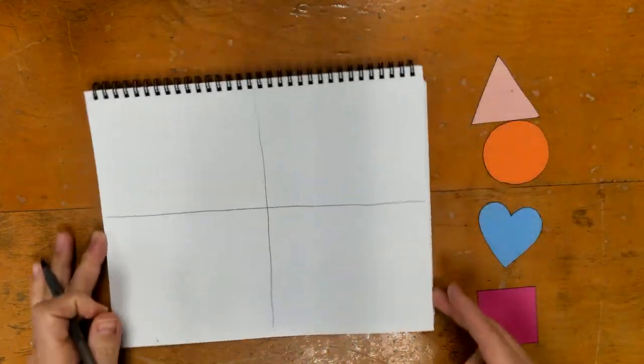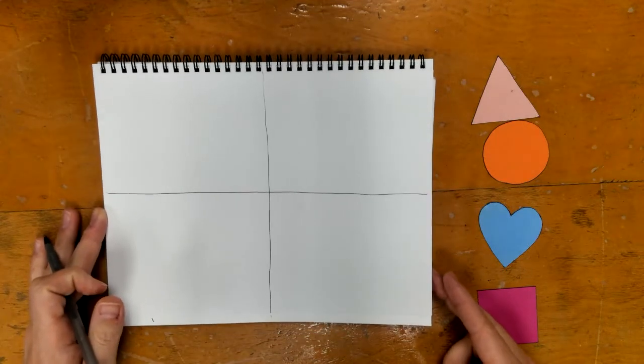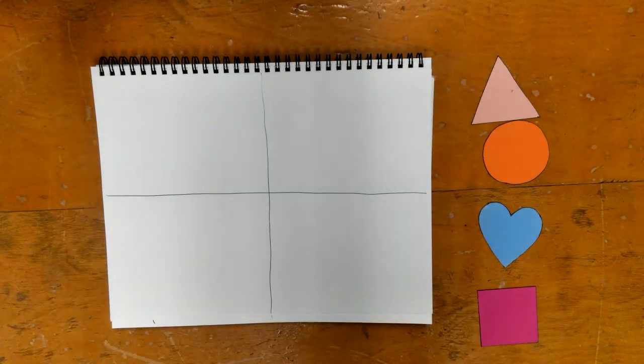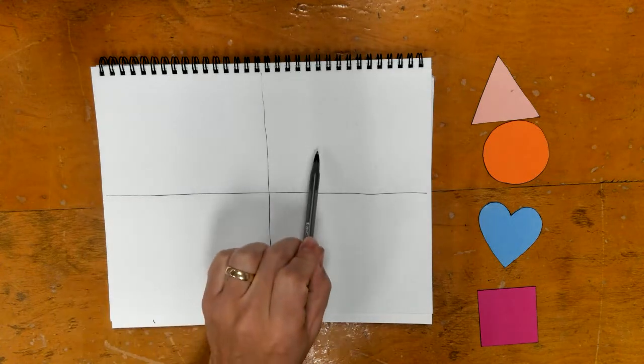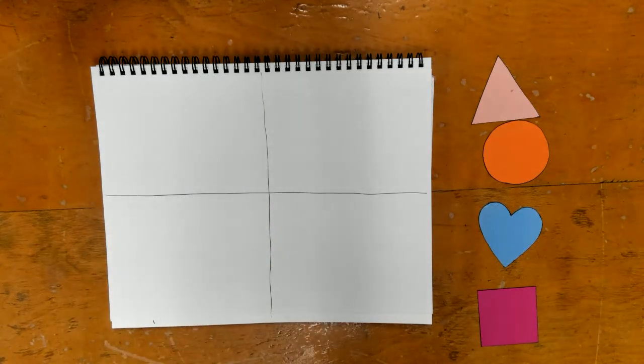I'm going to take my paper again and turn it back to how we had it in the start. So what I have now are four rectangles that are all pretty equal in size.